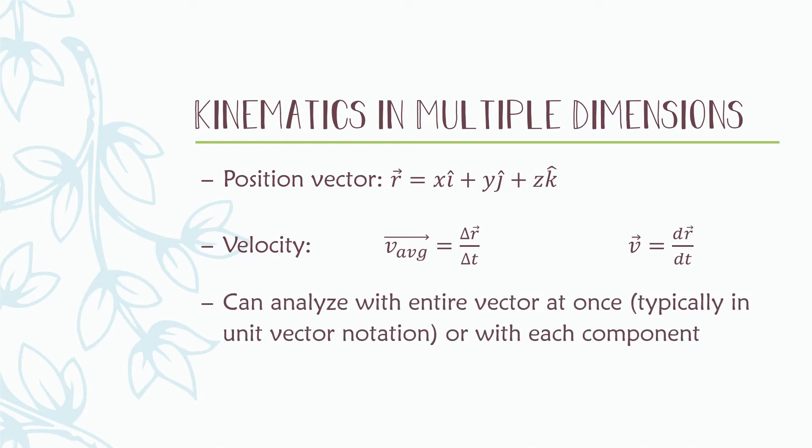We could analyze the entire vector at one time, which is typically what we'll do when we have unit vector notation, or we could look at just one component, focusing only on the x components, on the y components, or only on the z components if they exist.